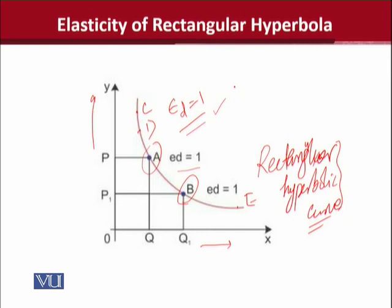When this happens, we can say that this demand function is following a rectangular hyperbolic curve. And the procedure of verifying this is easy: we can take the derivative and apply the usual formula of elasticity of demand and see if the answer is minus 1. And if it is, then definitely we are able to verify that this is a rectangular hyperbolic demand function.